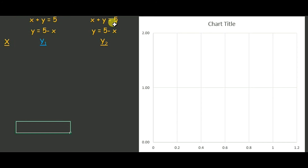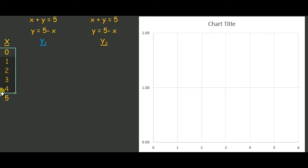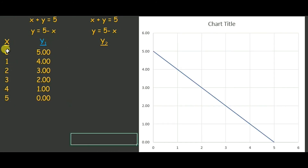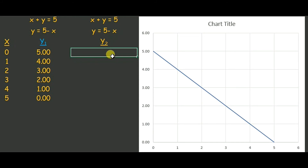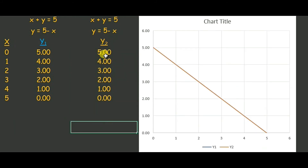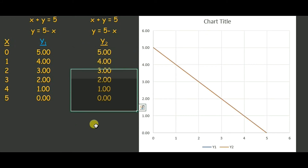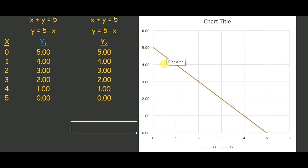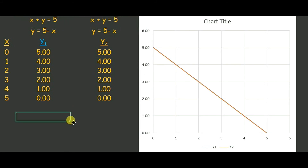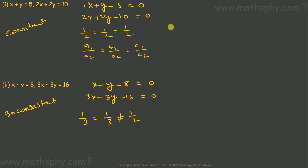Now let's plot x + y = 5, which gives y = 5 - x. Taking x values from 0 to 5, we get corresponding y1 values. Plotting the same x values into the second equation gives y2 values. You can see the blue line first, and when y2 is plotted, the orange line comes over the blue line. Since these two lines are coincident — superimposing each other — these two equations have infinitely many solutions.